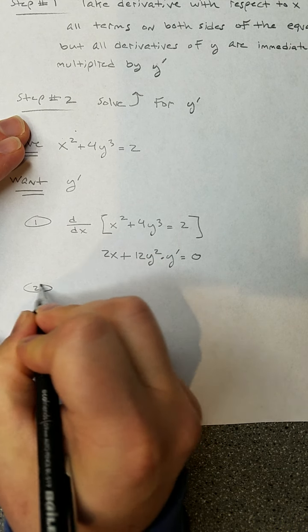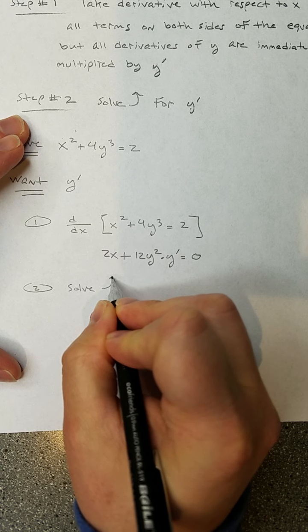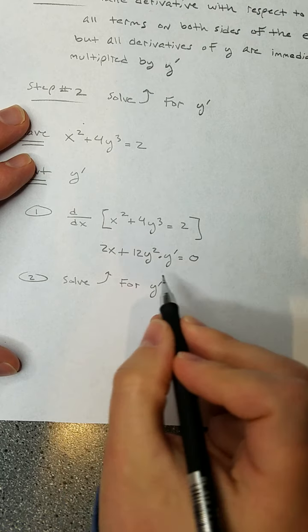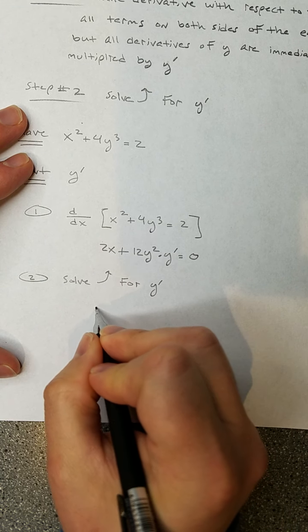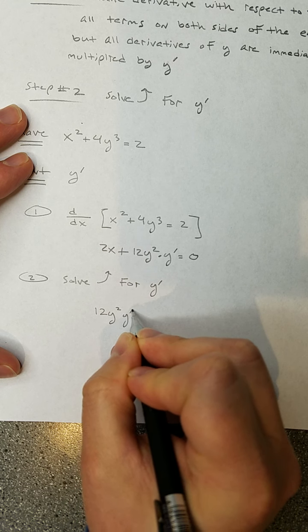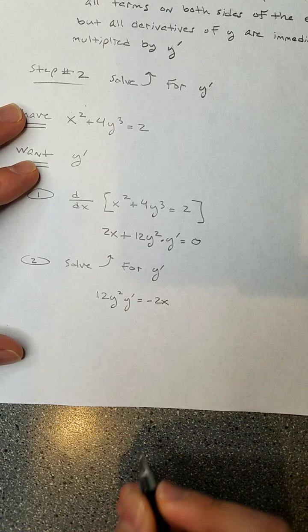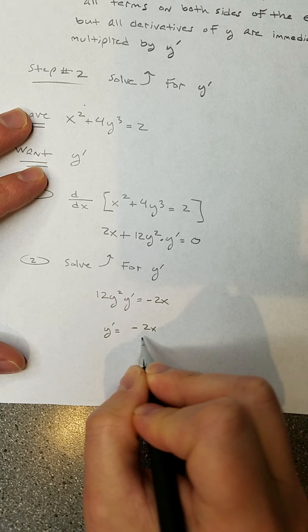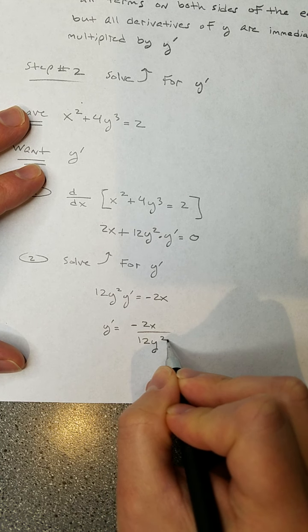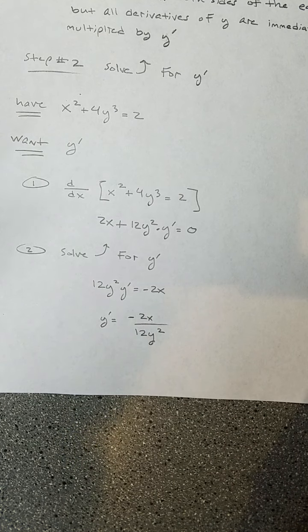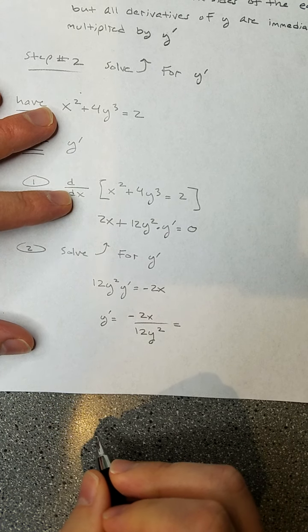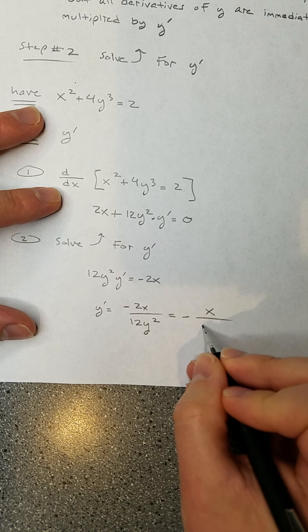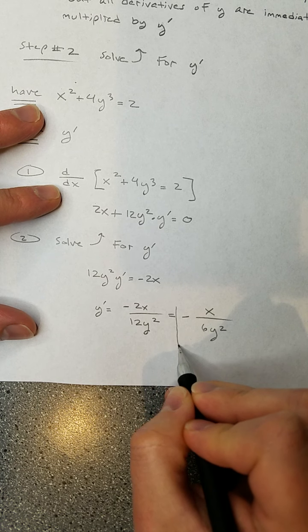Now step two: solve for y prime. Move the 2x over to the right-hand side, giving 12y squared times y prime equals negative 2x. Then divide both sides by 12y squared to isolate y prime. So y prime equals negative 2x over 12y squared. We can reduce that — the 2 and 12 simplify — giving y prime equals negative x over 6y squared. There's your y prime.